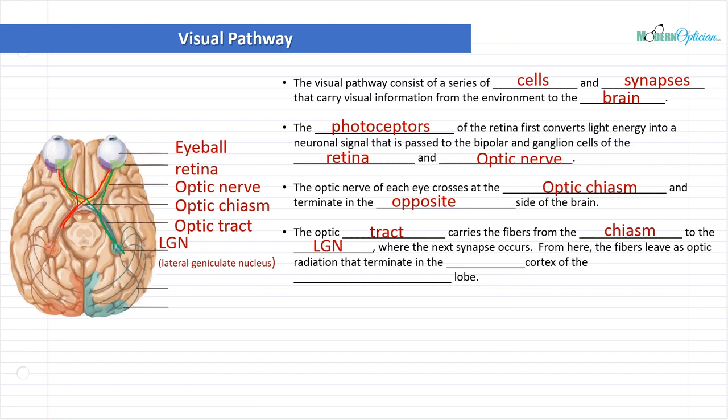From here, the fibers leave as optic radiation that terminate in the visual cortex of the occipital lobe at the back of the brain. And you'll notice how everything from the green side came down over here and everything from the red side came back over there. So very interesting how you see how all these things kind of come back to the back of the brain. They cross over at one point, but all the information is being relayed all together.